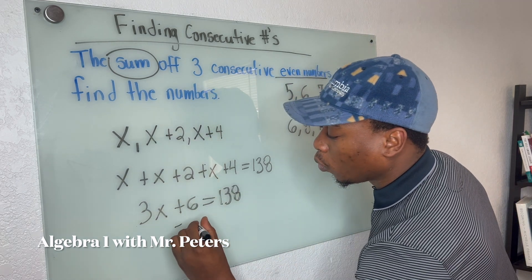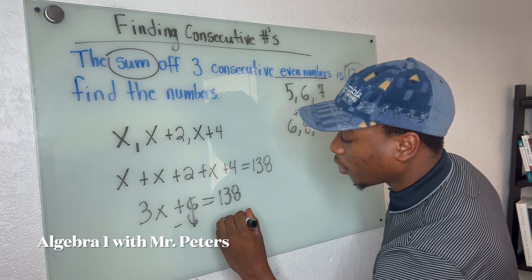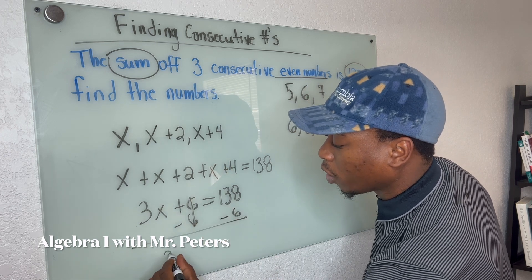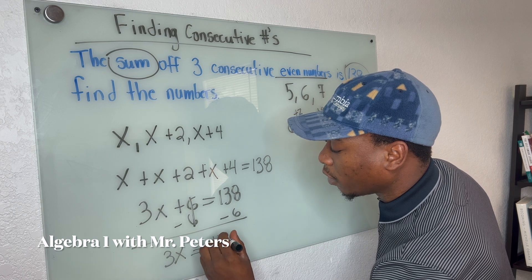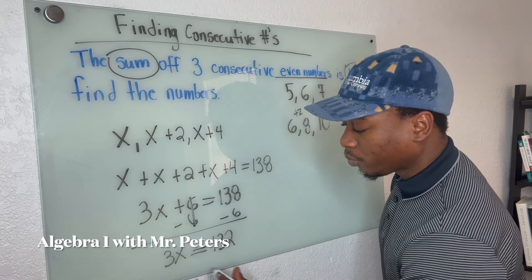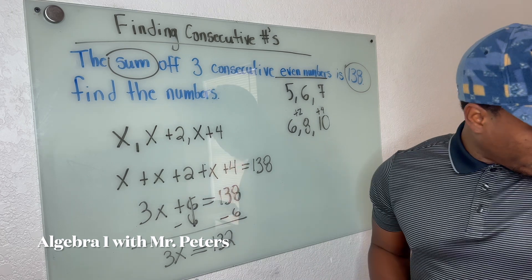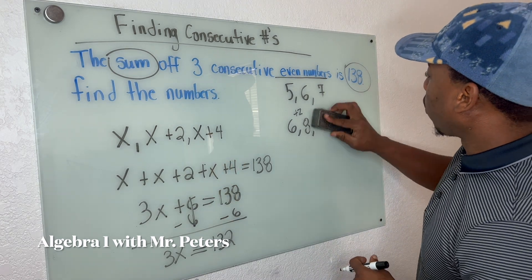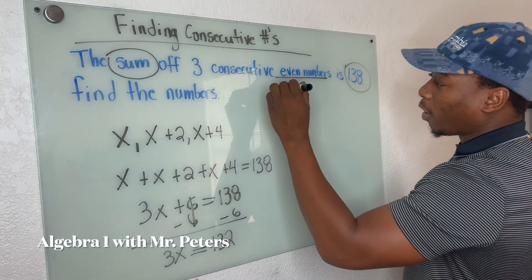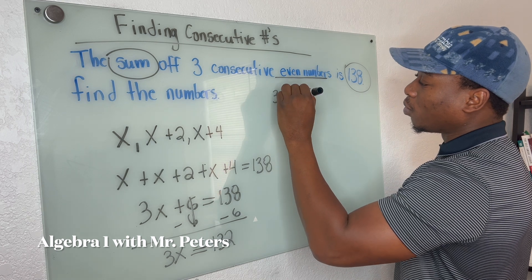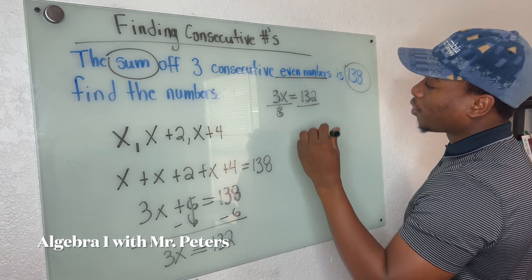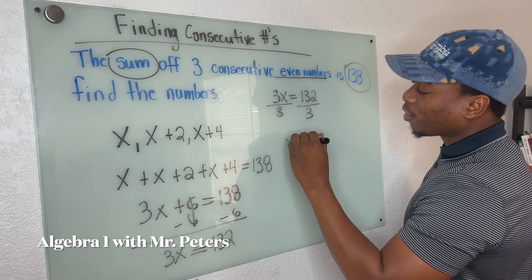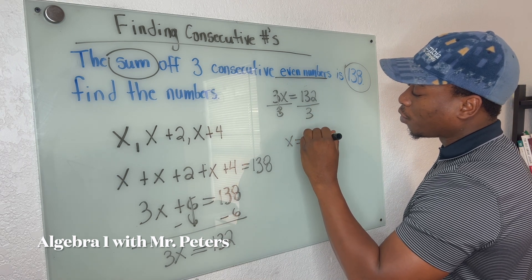Now we combine our like terms by subtracting 6. We're going to get 3x is equal to 132. Now let's go back up here at the top. And once we divide, 3x is equal to 132, we should get x is equal to 44.